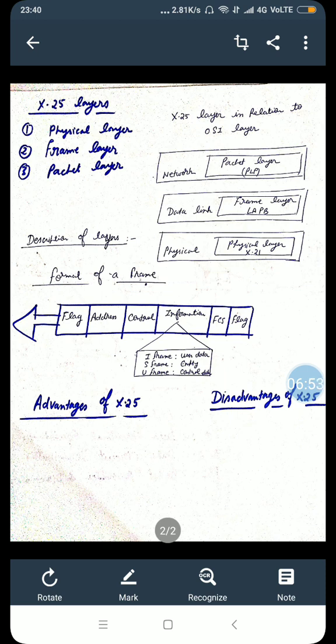While the frame layer is responsible for making a connection between a DTE and DCE, the packet layer is responsible for making a connection between two DTEs, end-to-end connection.